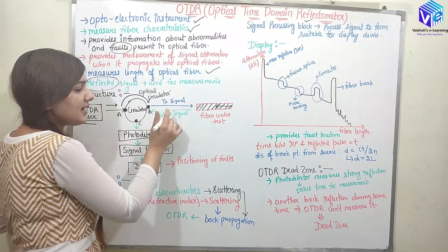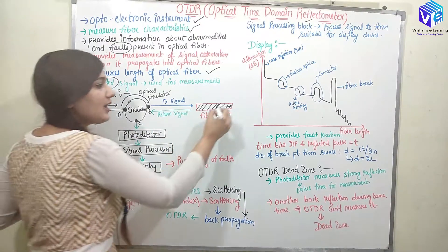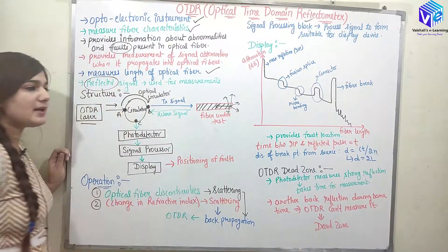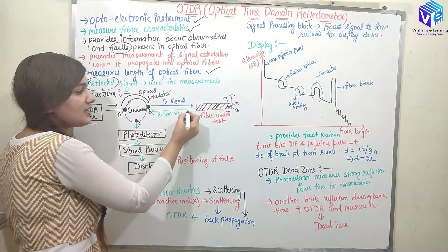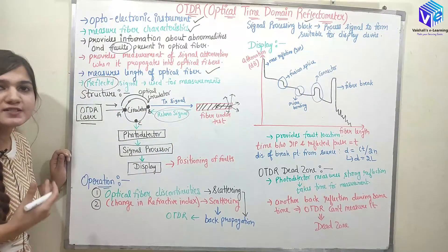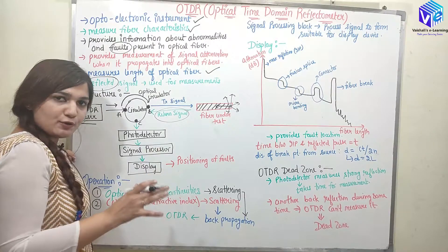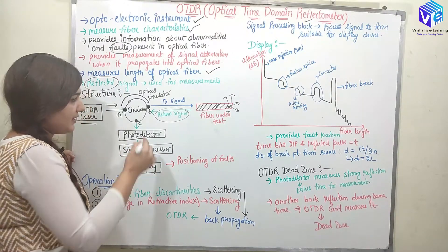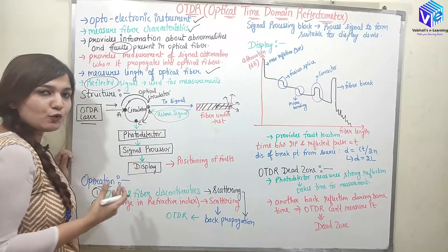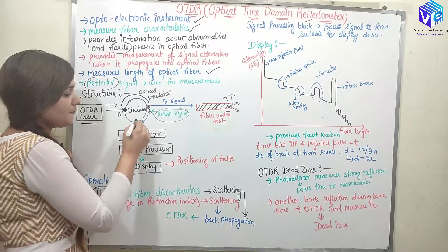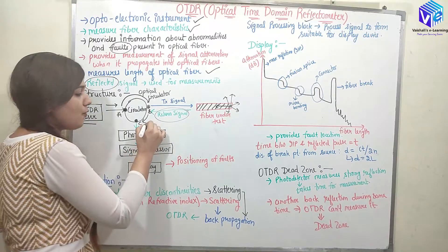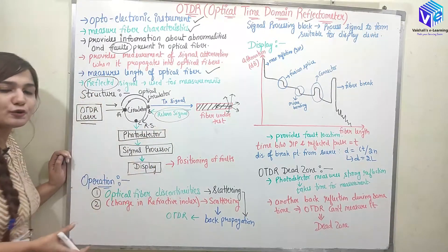This backside scattered signal is the return signal. The light signal can scatter in any direction, and the backside signal comes back to the circulator. Since the circulator is a one-directional device, with input at terminal B, it sends the return signal to terminal C, where we have connected a photo detector.